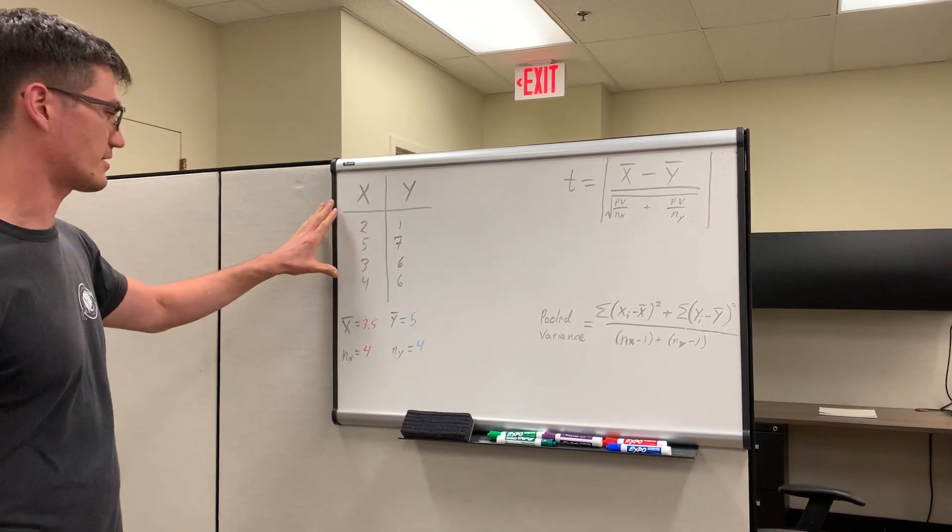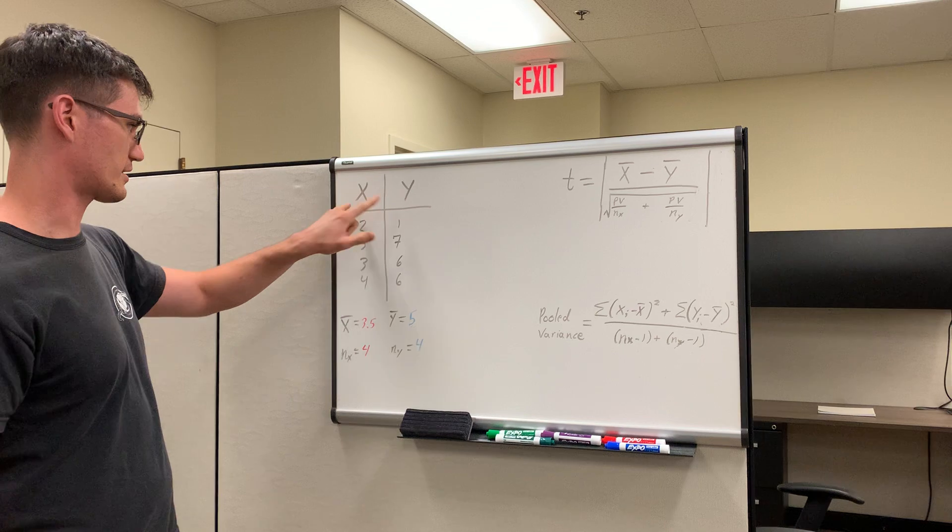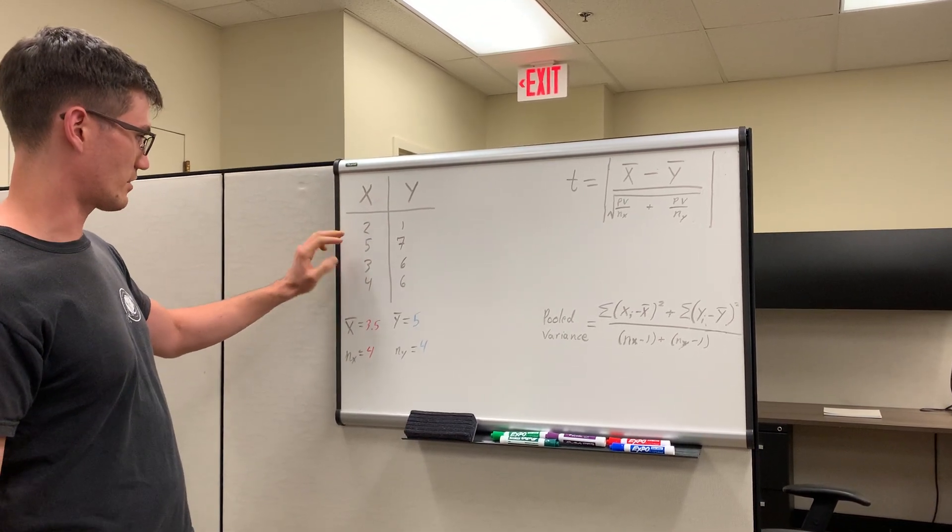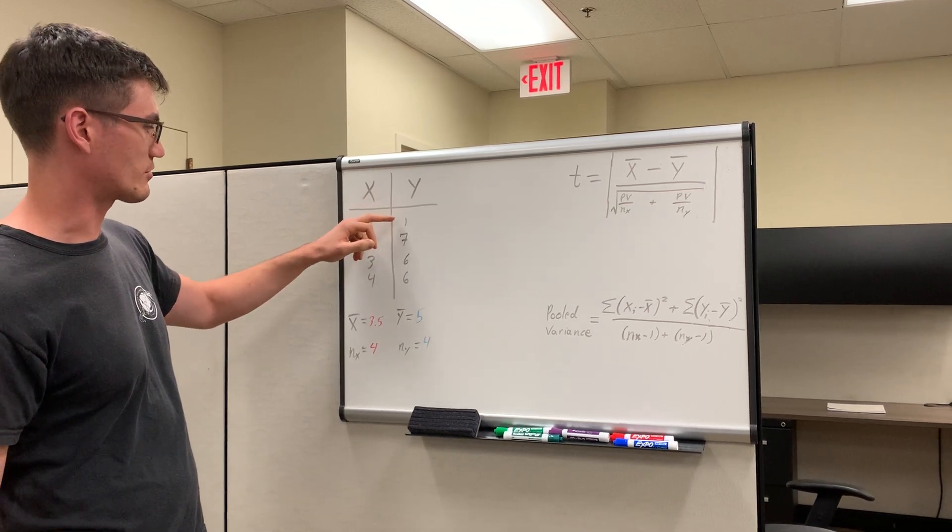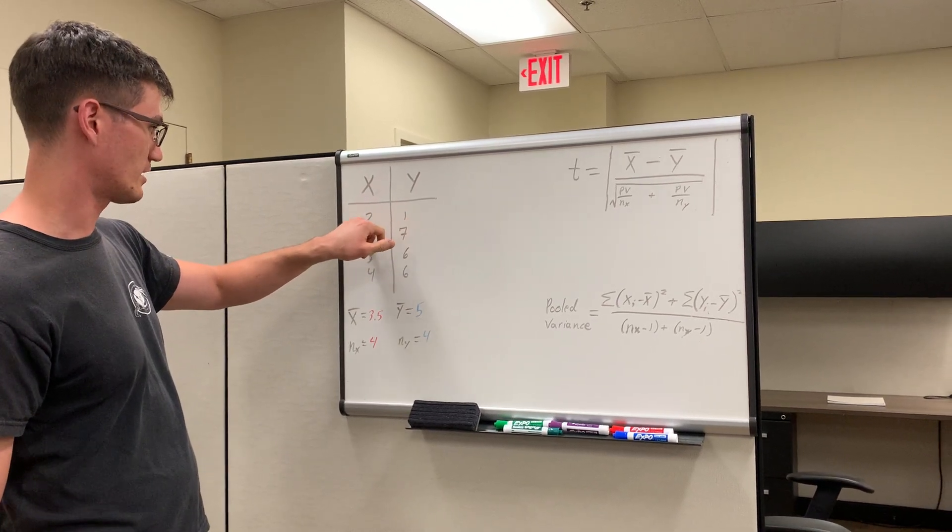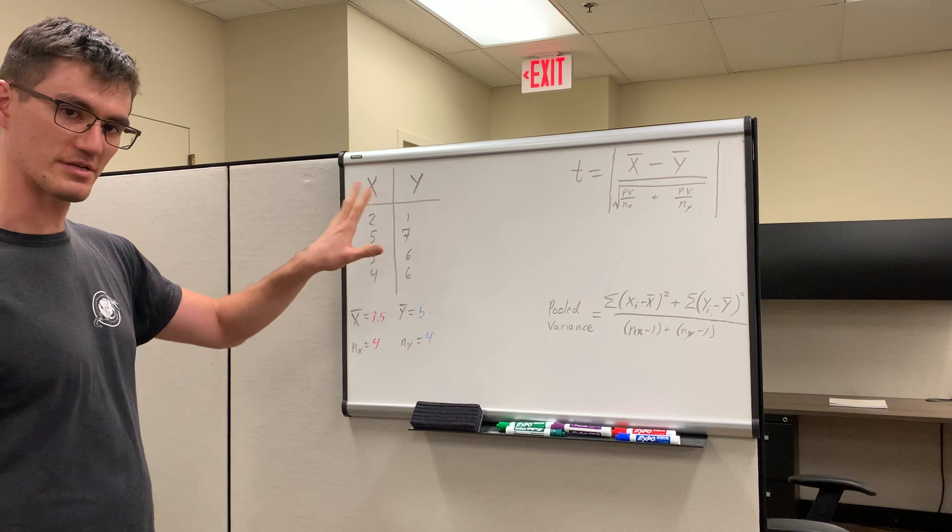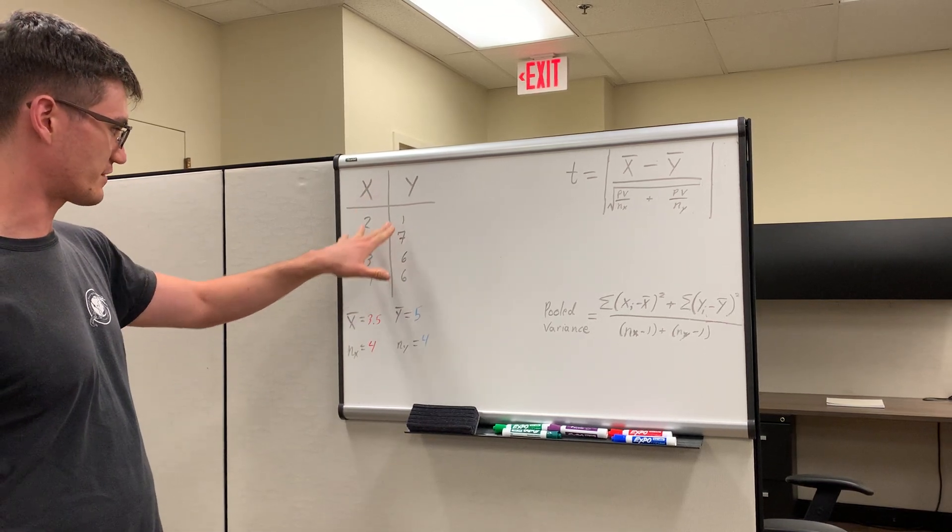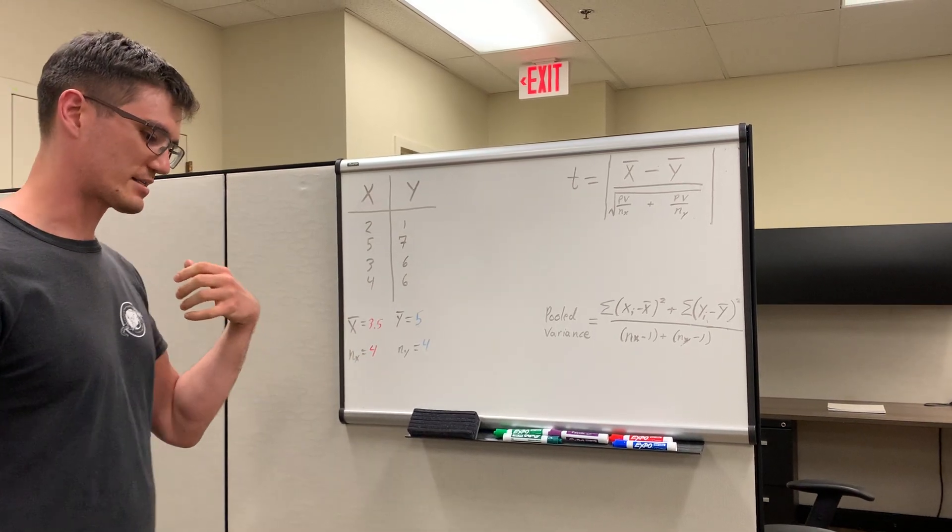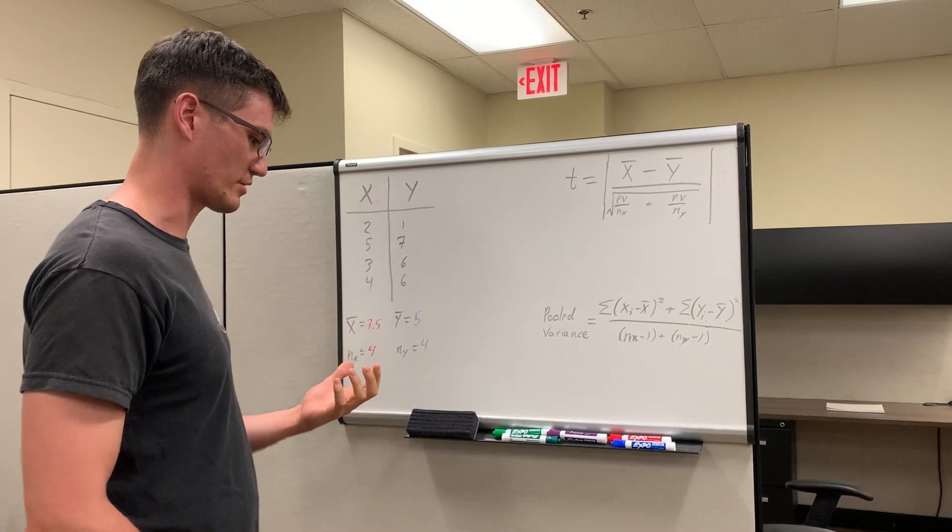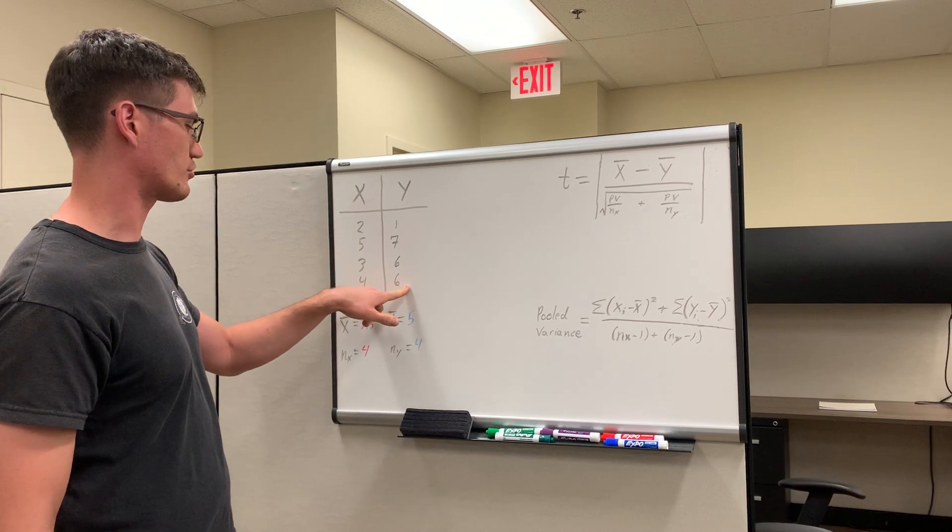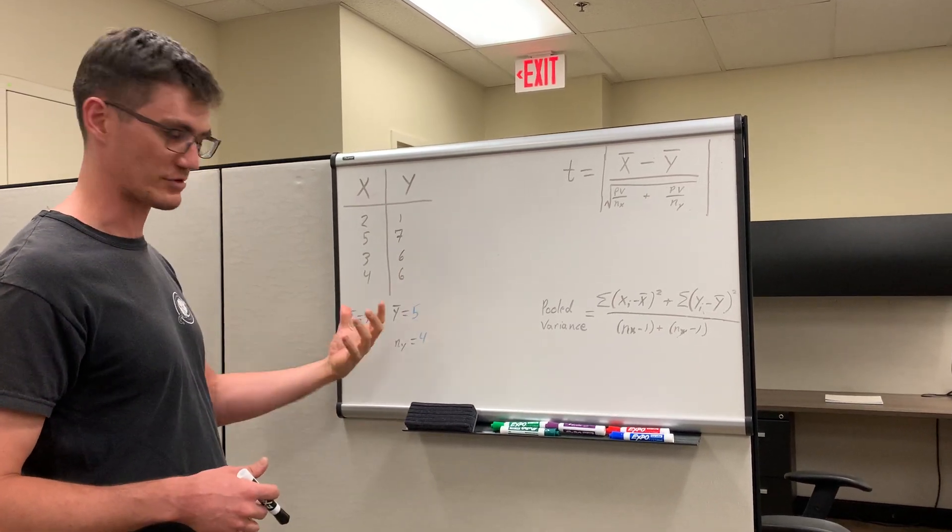And so the first thing you need to do when you're examining a dataset you have between your x and your y-treatment is you just need to eyeball them and see if there's any overlap between these two treatments. We've got an x: 2, 5, 3, 4. In y-treatment, we have 1, 7, 6, 6. So there's not much overlap, but there is some between these two data points, between 2 and 1. So that means we do have to conduct some sort of test in order to figure out if these two groups of numbers are statistically different from one another. And by statistically significantly different from one another, we mean that there's a difference between these two treatments that's non-random - that there's actually some true trend in reality.